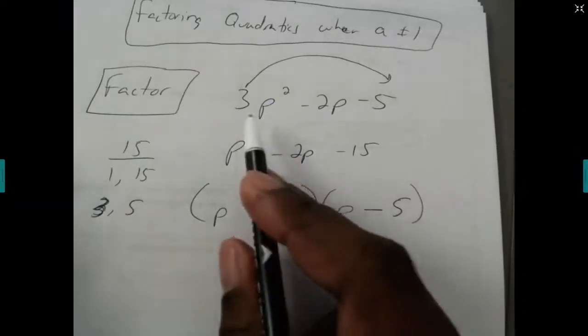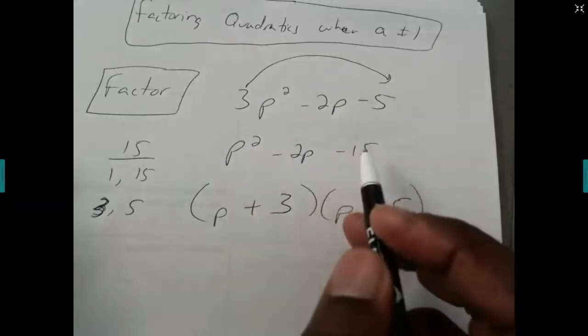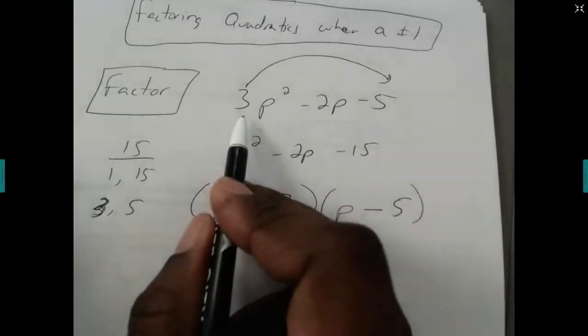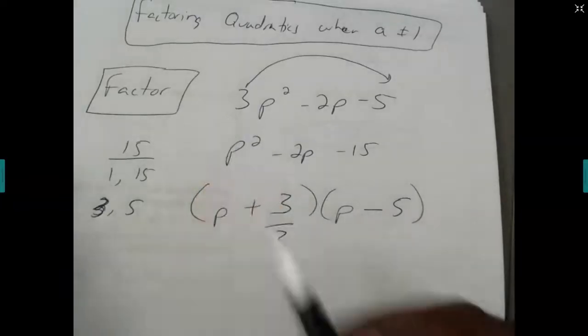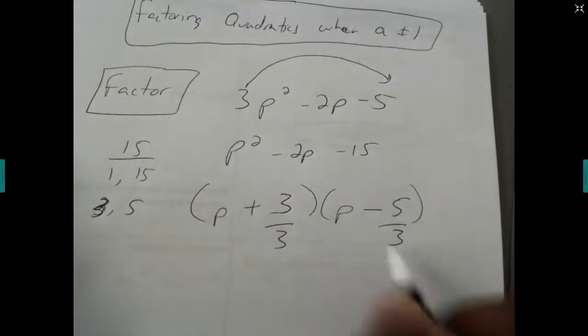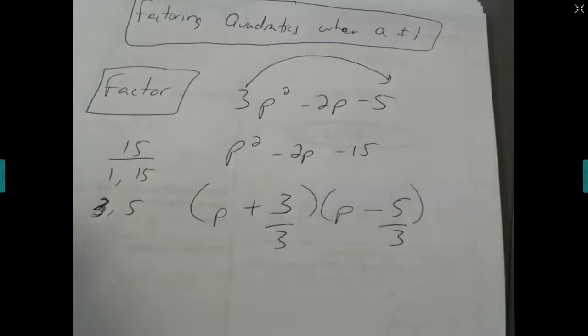So because we begin by multiplying by 3 to make it something we could factor, whatever that number was, we come back and divide by it. In this case, it's the number 3. We divide both numbers by it. If you can reduce the fraction, you have to reduce it. So 3 over 3 reduces to be 1. So the first factor is p plus 1.